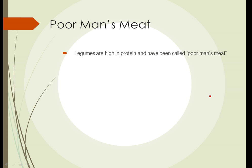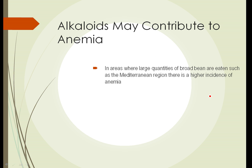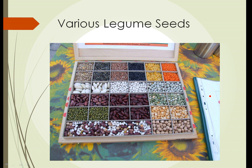Legumes are extremely high in protein and have been called the poor man's meat. So they can fix atmospheric nitrogen into a form that plants can use. They're high in protein. It's not all good news though. Many legumes, certain beans in particular, contain certain alkaloid compounds which may increase the incidence of anemia. And in certain Mediterranean areas where large quantities of broad beans are eaten, there is a higher incidence of anemia. Here we can see a collection of various legume seeds and you can see they come in a huge range of sizes and colors.